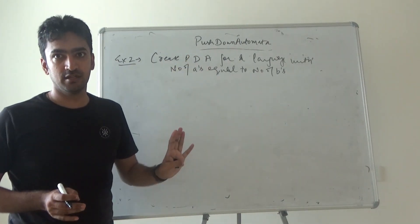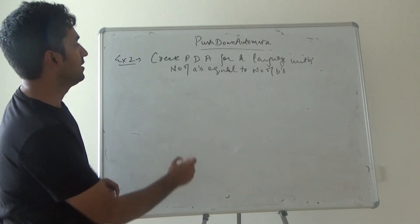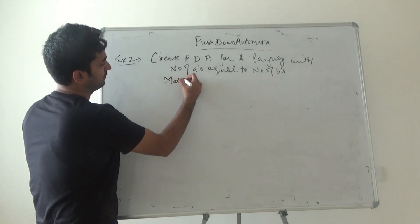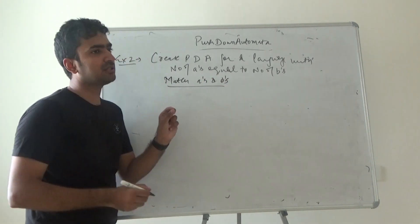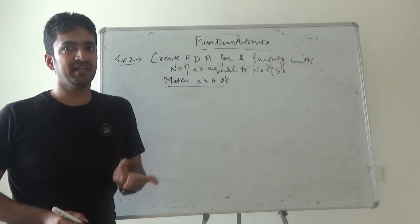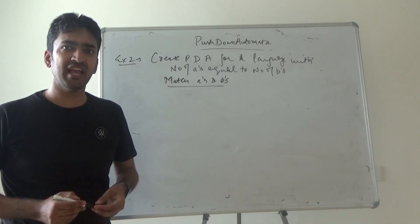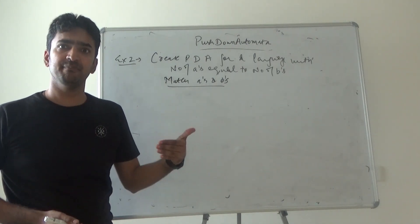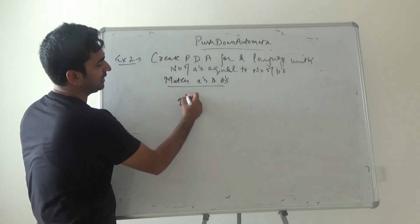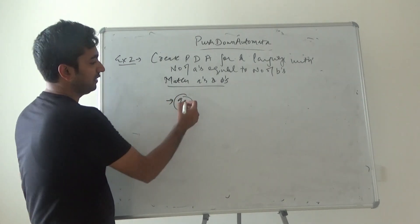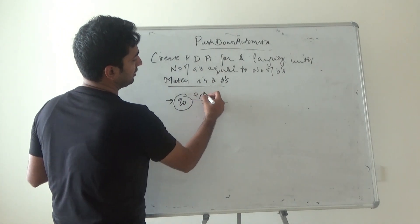So guys, I cannot really judge which will be my starting state because the starting state may have a or may have b also. So it means if I'm writing q0, if I'm writing a, z0, the answer could be (a, z0) - no issues in that.